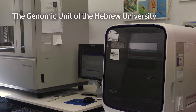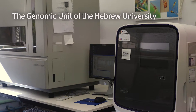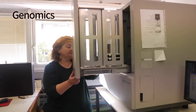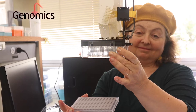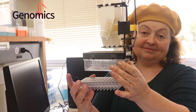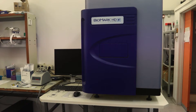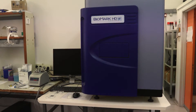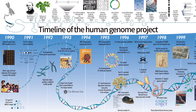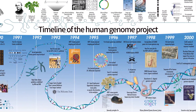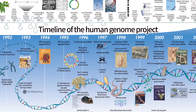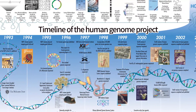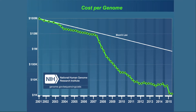We are here at the genomic unit of the Life Science Institute of the Hebrew University. Genomics is the science that studies genomes by establishing their sequence and analyzing them by computational methods. We have here sophisticated machines that can establish the sequence of DNA molecules. Similar machines were used to sequence the entire human genome 15 years ago. Since then, technology has made huge progress, and genomes that took years to sequence at huge cost are sequenced now in a matter of days for very little money.